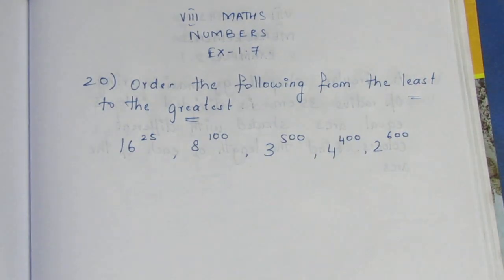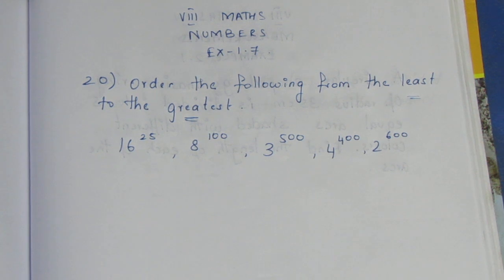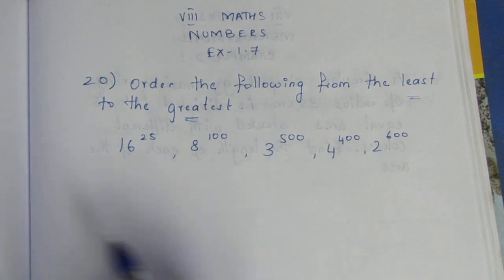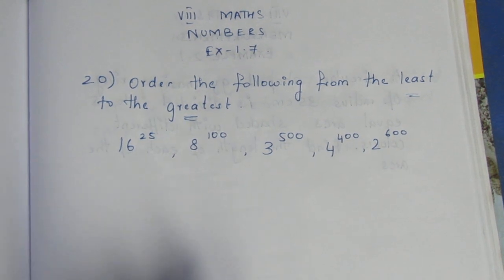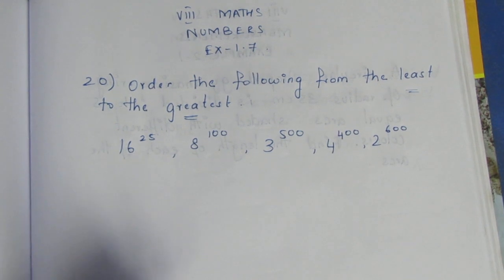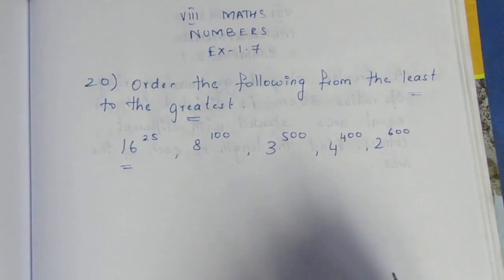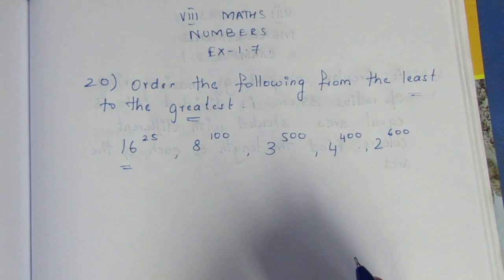What do we do here? We are going to open the numbers. If you look at the numbers, the base is not the same and the power is not the same. The numbers in this question are: 16 power 25, 8 power 100, 3 power 500, 4 power 400, and 2 power 600.